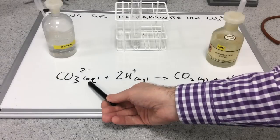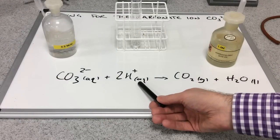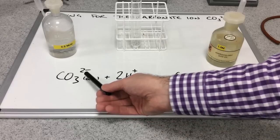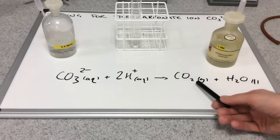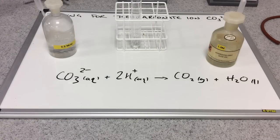So we've got those aqueous carbonate ions from the sodium carbonate. We've got H plus ions from the acid. So we need two of those to combine with the 2 minus charge of the carbonate ion. And there's our carbon dioxide gas. So that's why we saw bubbles. And we've produced water as well.